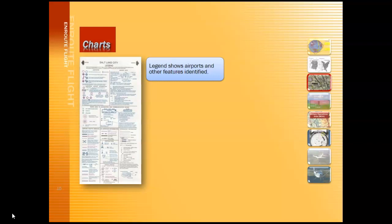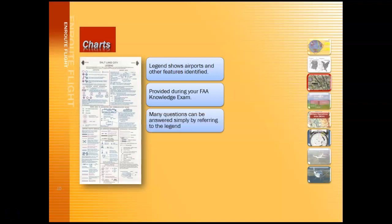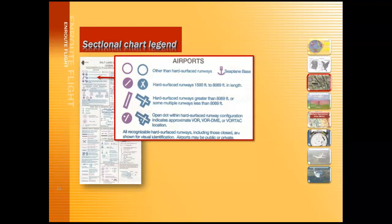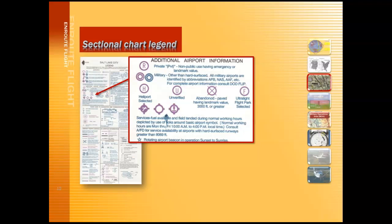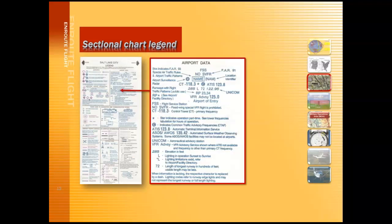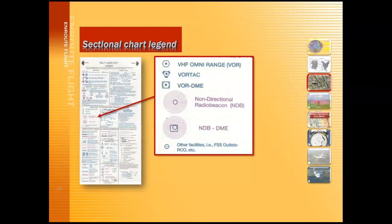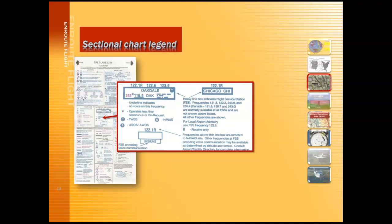While you're getting to know the sectional chart, it's important to take advantage of the legend printed on the front of the chart. The legend gives you all sorts of information about the symbols used and the type of information you can find on the sectional chart. This legend is even provided during your FAA knowledge exam, and many of the questions can be answered just by referring to it. For example, the different airport symbols, additional airport information, different types of airports like heliports, private airports, or seaplane bases, how to read the data given about each airport, and information about radio navigation aids like VORs or NDBs — non-directional radio beacons — and how to find the frequencies to use them.